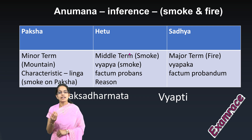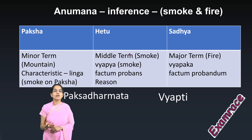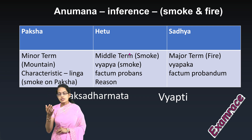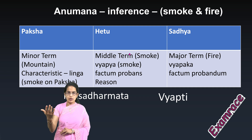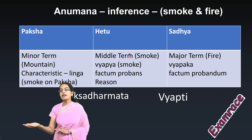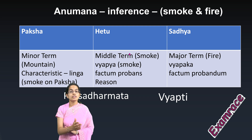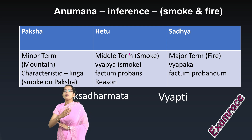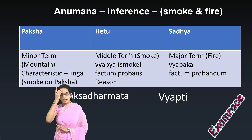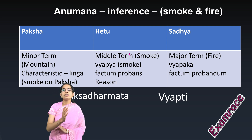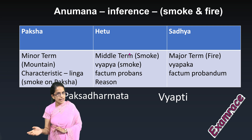The most common example that we took was the example of smoke and fire on a mountain. Wherever there is smoke, there is fire. But wherever there is fire, we cannot always say there has been smoke. With this, we tried to understand what was the minor term, major term, and the middle term.